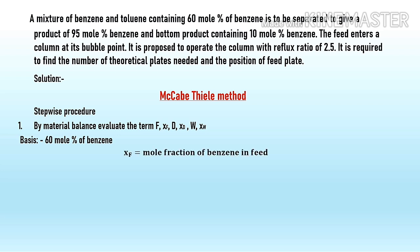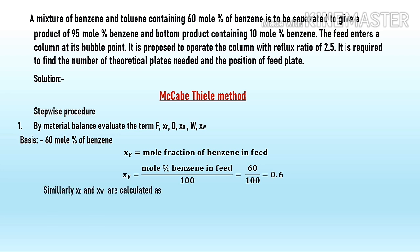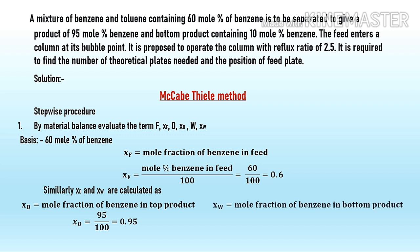XF is the mol fraction of benzene in the feed, so XF = 60/100 = 0.6. Similarly, XT is the mol fraction of benzene in the top product (distillate), so XT = 95/100 = 0.95. And XW is the mol fraction of benzene in the bottom product (residue), so XW = 10/100 = 0.1.